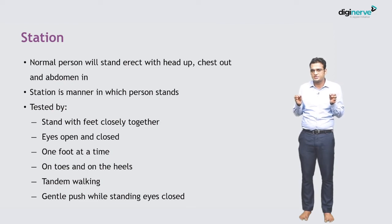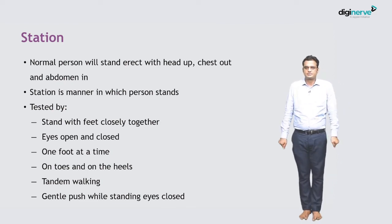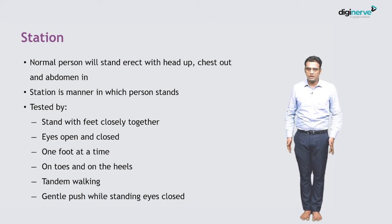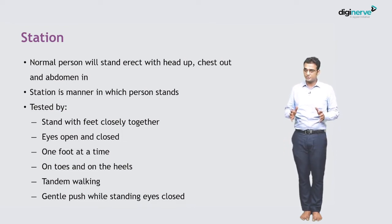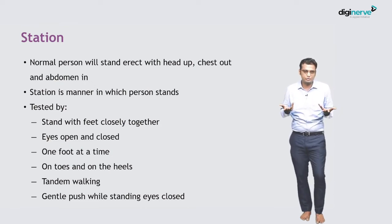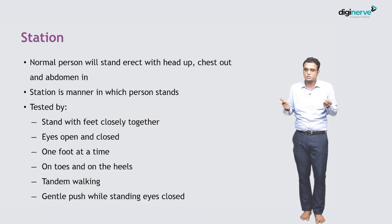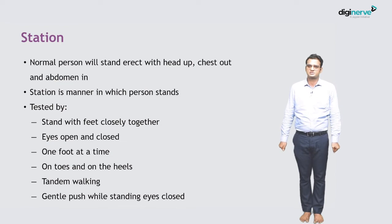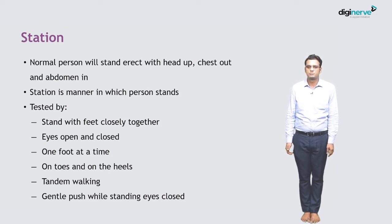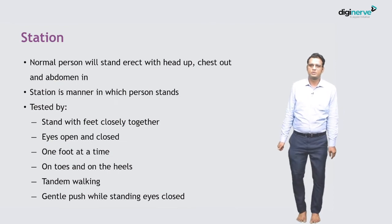The first thing we do is examination of the station. Station means how a person is standing. A normal child will stand erect with the head up, chest out, and abdomen in. How the child is standing is also going to provide a lot of information in the motor system examination. To test station, you ask the child to stand with the feet closed together with eyes open, and then eyes closed, one foot at a time, on the toes.